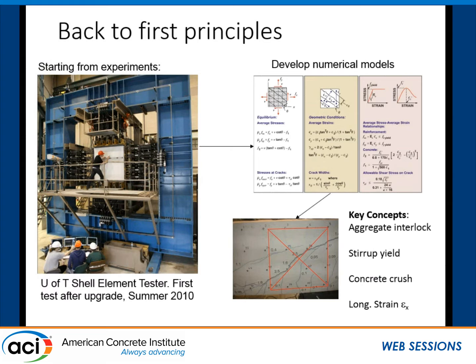We go back to first principles. Over the last 30–40 years at the University of Toronto, we've researched how cracked reinforced concrete behaves — using the shell tester developed with Frank Vecchio and Michael Collins, leading to the modified compression field theory. The shear stress in a concrete member is resisted by the web. Key mechanisms include aggregate interlock, shear on the crack, yielding of stirrups, crushing of concrete, and the longitudinal strain at mid-depth. Larger longitudinal strain at mid-depth means wider cracks and lower strength; smaller strain means stronger shear strength.